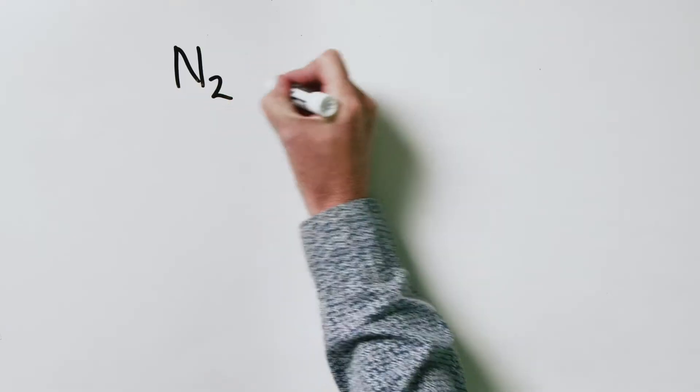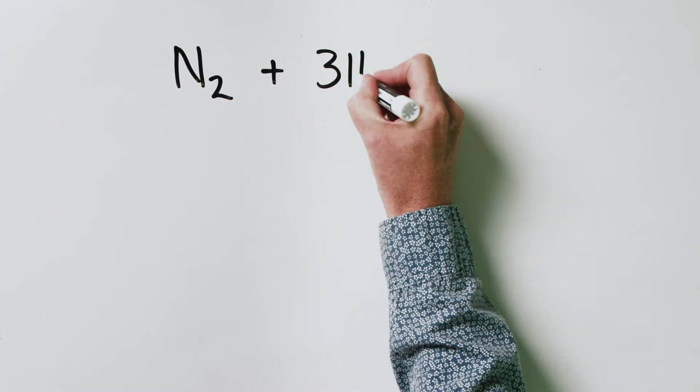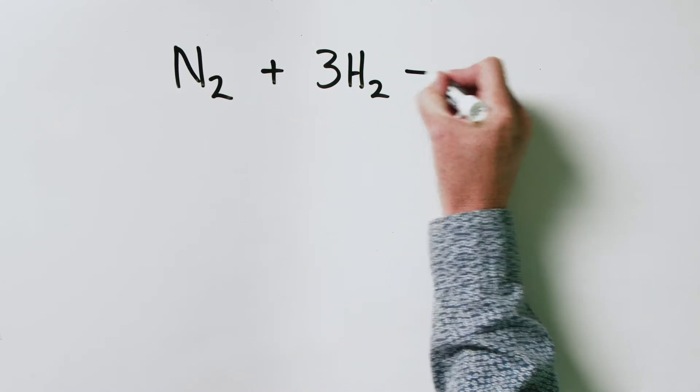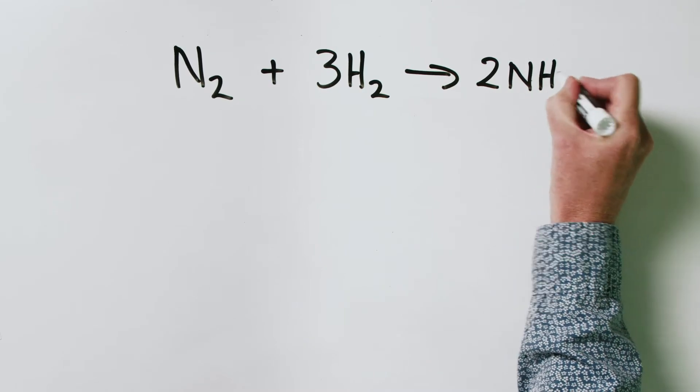Hi, I'm Prof L and welcome to Chemistry Matters. Today we are going to be looking at a stoichiometry problem or two, and this is going to involve a reaction that we looked at in a previous video — the reaction of nitrogen and hydrogen to give ammonia.